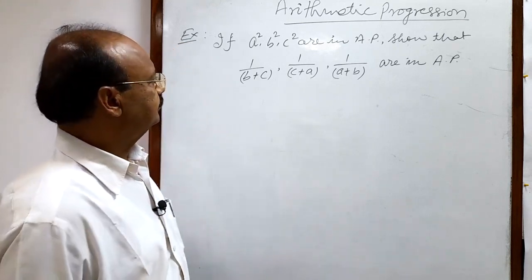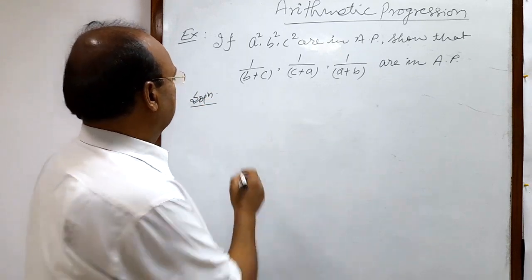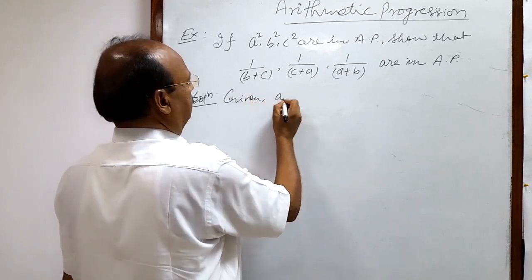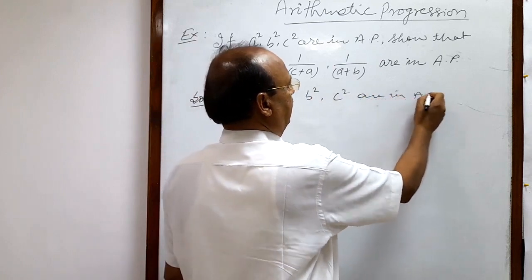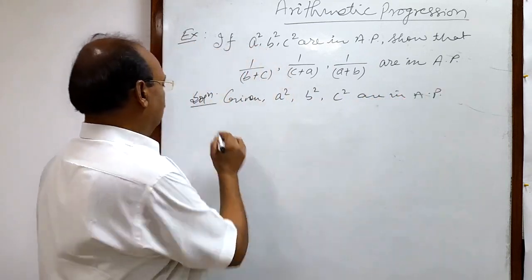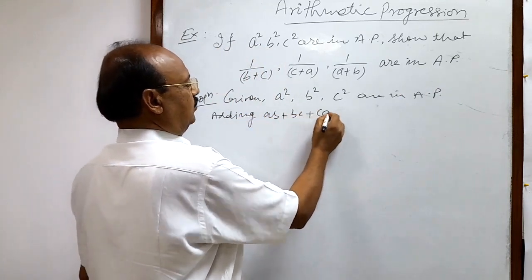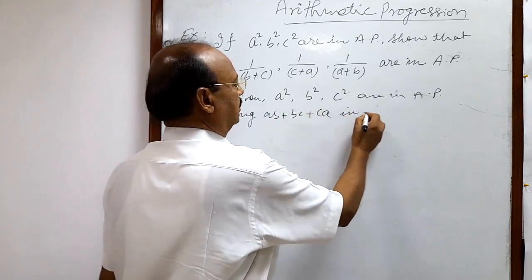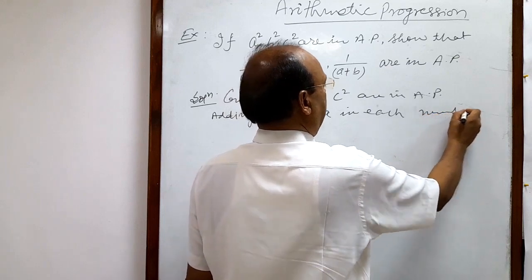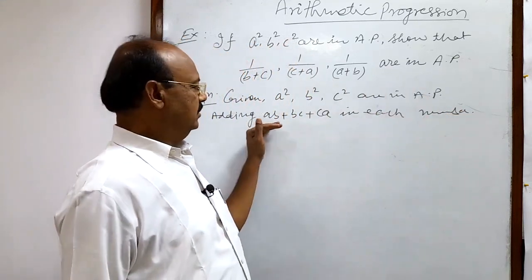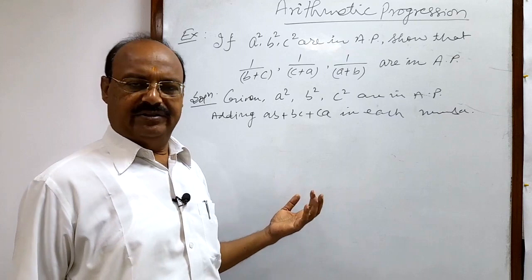Let us see the solution. Given that a², b², c² are in AP. Now we are adding ab+bc+ca to each given number. You can get this trick with a little bit of practice, and some practice is required in mathematics — you know it very well.